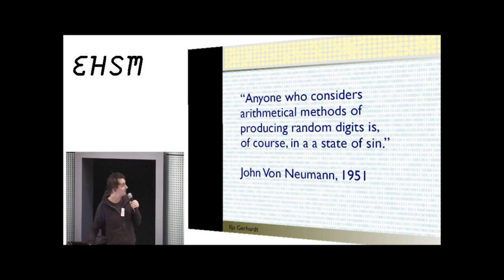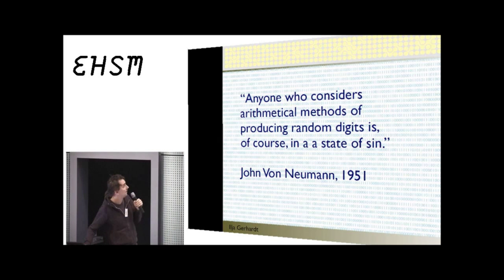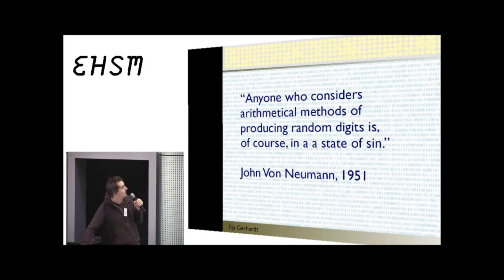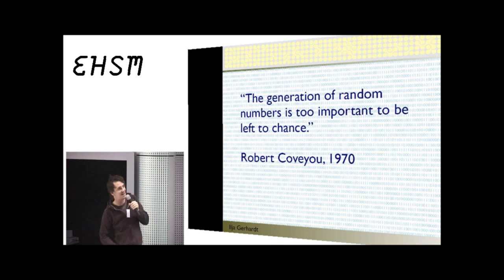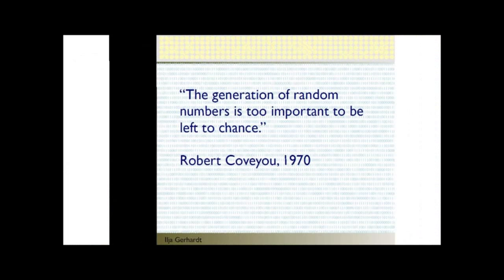John von Neumann said: 'Anyone who considers an arithmetic method of producing a random digit is, of course, in a state of sin.' There's no real random number from a pseudo-random generator. As another saying goes: 'The generation of random numbers is too important to be left to chance.'